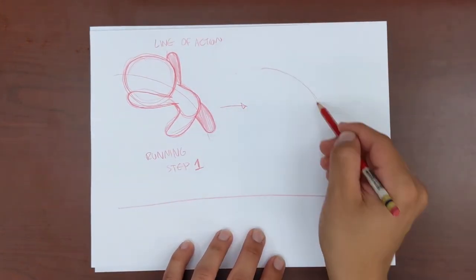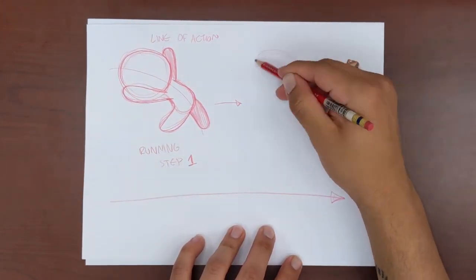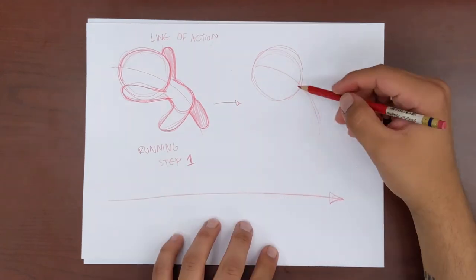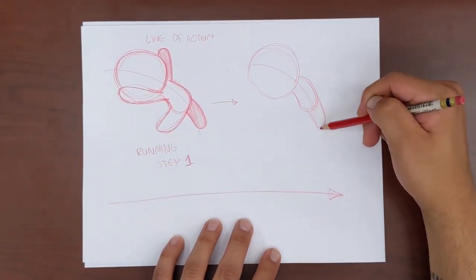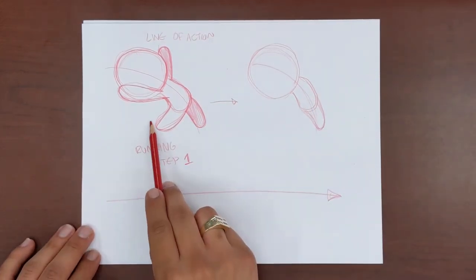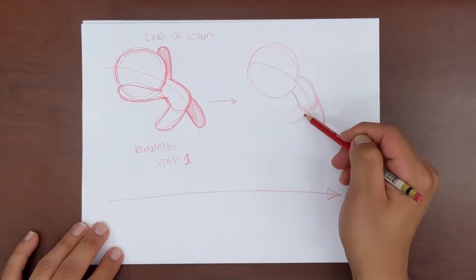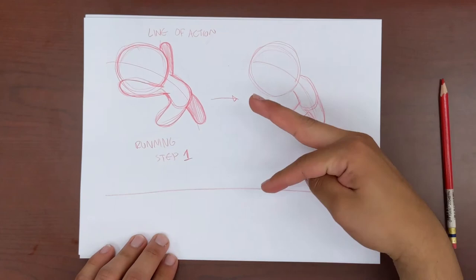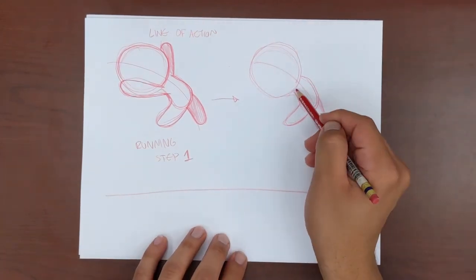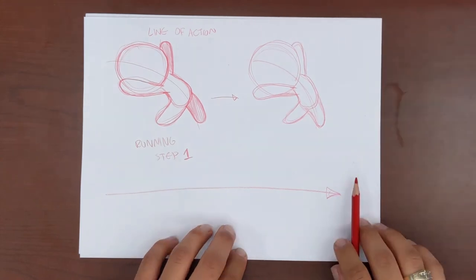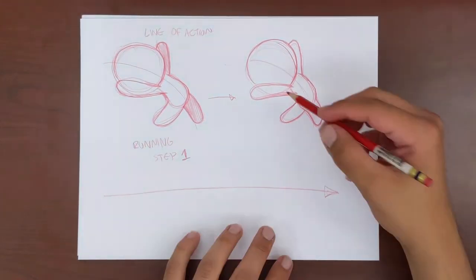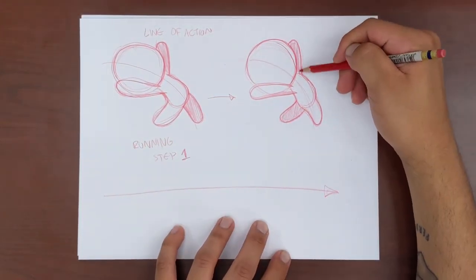You can use the same line of action to create the next step in this action sequence by just switching which leg is coming forward, like so. To draw the next step in our character's running sequence, we can replicate almost every step that we took before, except this time we're just switching which leg is taking the forward stride and which leg is taking the backward stride. Congratulations! We now have our character's running sequence down.